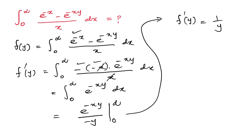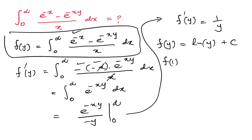The next step is to integrate with respect to y, so f(y) equals the natural log of y plus a constant C. Now let's evaluate f(1): when y equals 1, e^(-x) minus e^(-x times 1) equals zero, so f(1) equals 0.